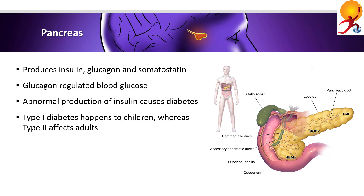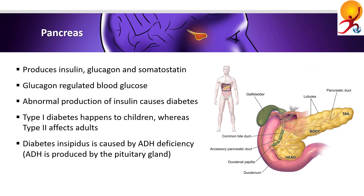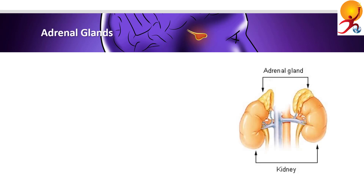Insulin must be administered parenterally because as a protein it will be digested if taken orally, so it must be introduced directly to the bloodstream. In type 2 diabetes, treatment is done with oral drugs that regulate glucose metabolism, or in more severe cases with parenteral insulin administration; moderation of carbohydrate ingestion is also an important aid. Diabetes insipidus is caused by deficient ADH secretion by the pituitary gland; blood lacks ADH, the reabsorption of water by renal tubules is reduced, and large volumes of urine are produced.